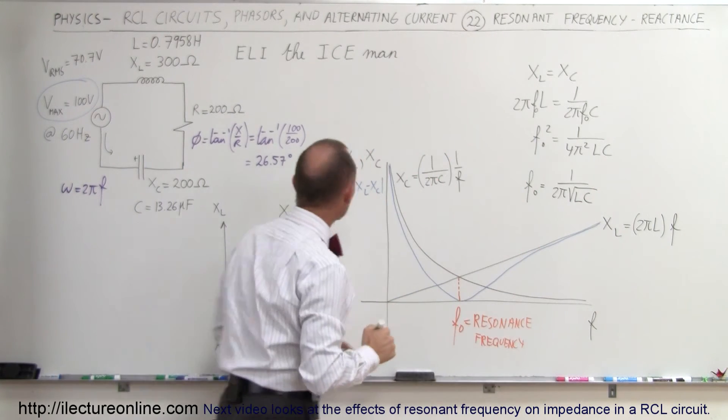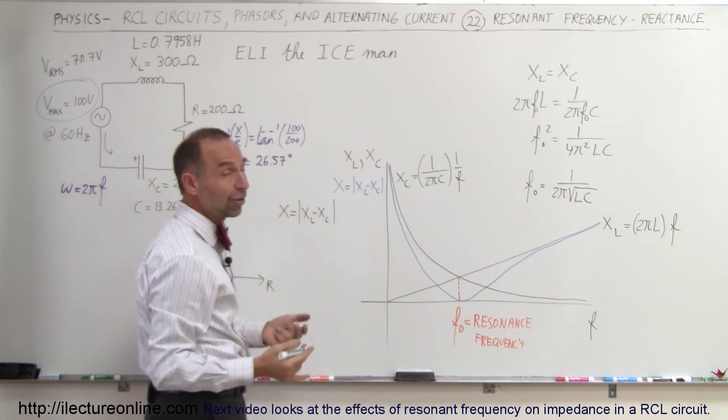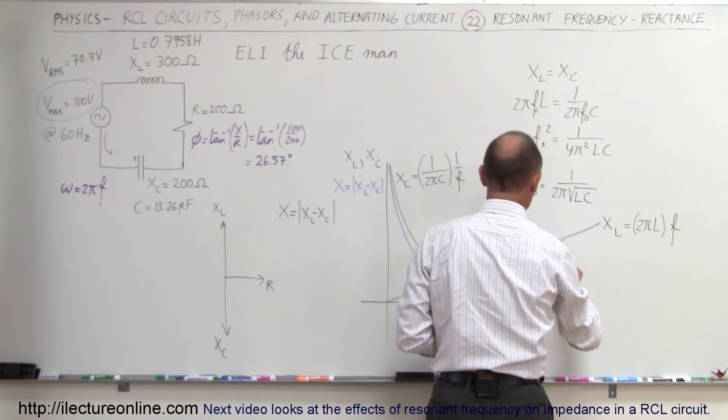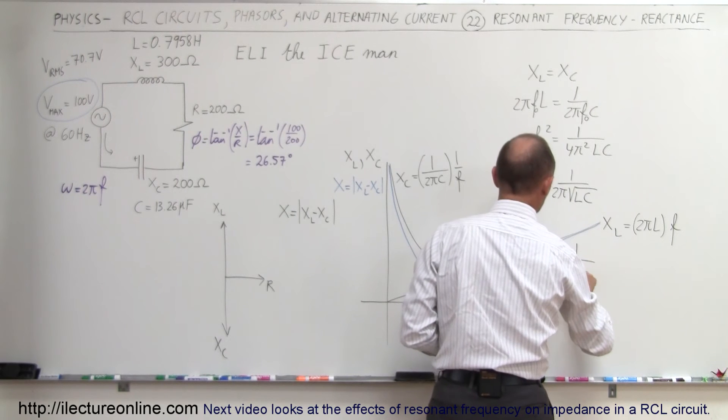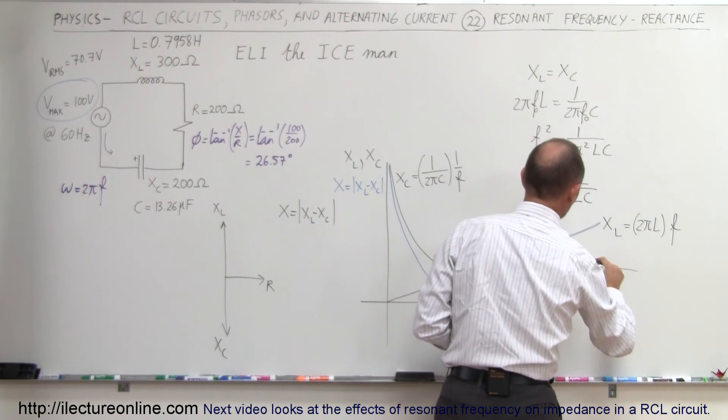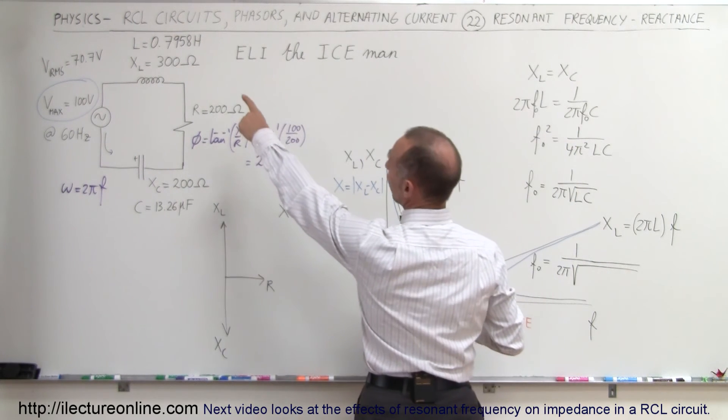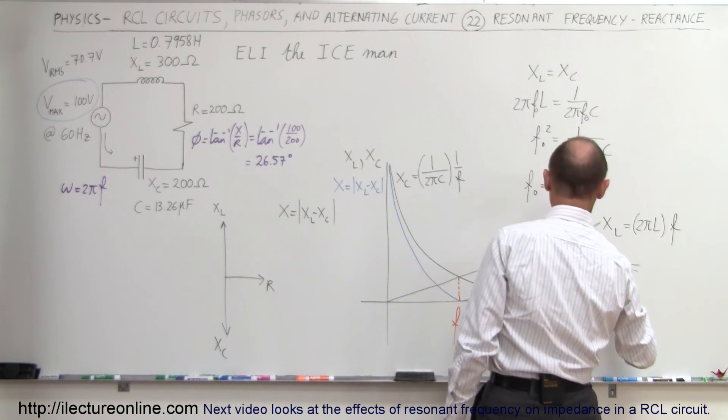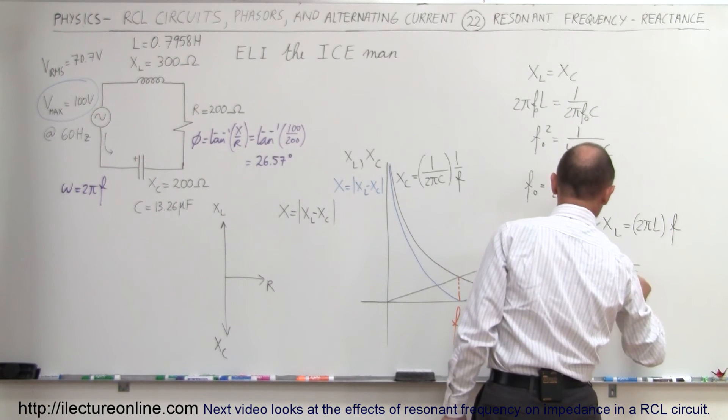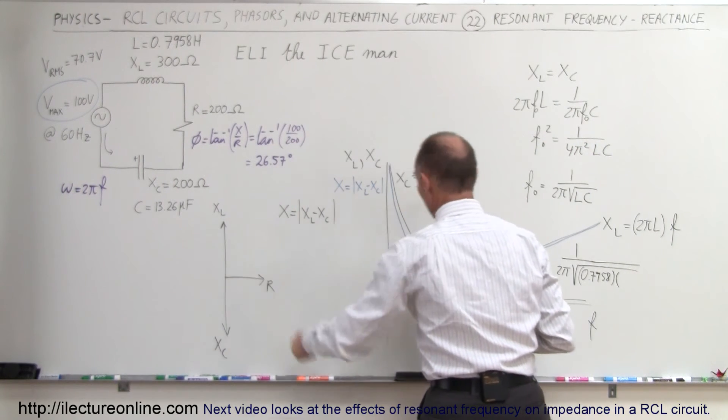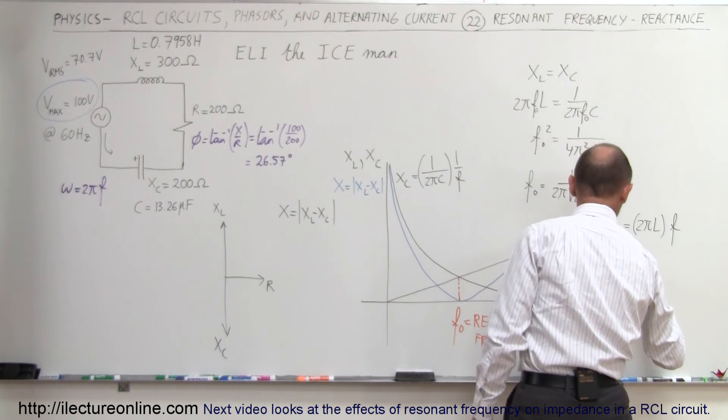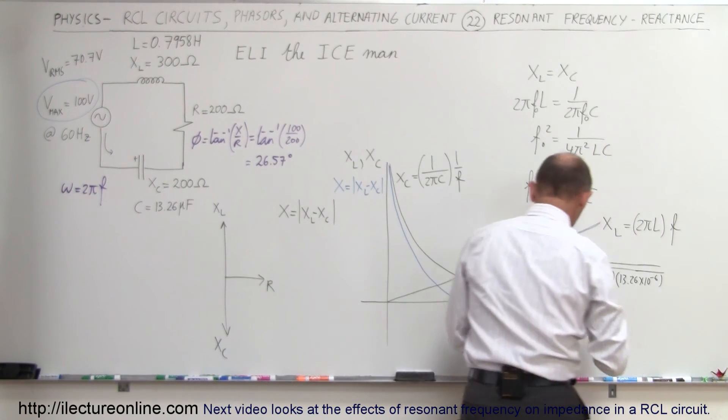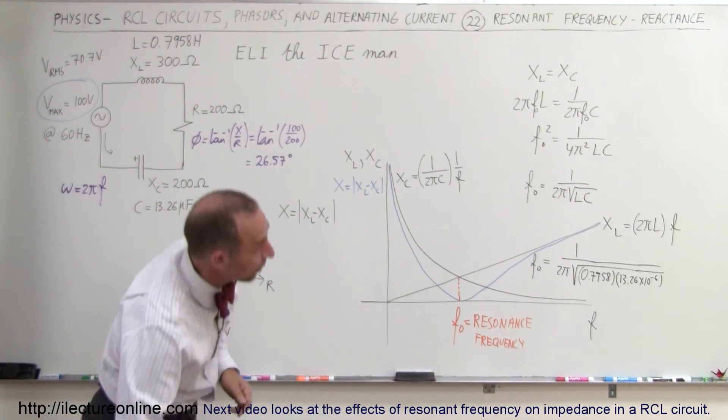In this particular case, in our example, what would be the resonance frequency? Let's calculate it. That would be equal to 1 divided by 2π times the square root of L, the inductance, which was 0.7958, and we multiply times the capacitance, which is 13.26 times 10 to the minus 6. Let's see what that resonance frequency would be for this particular example.